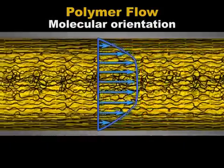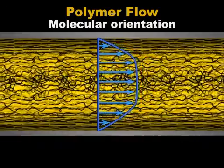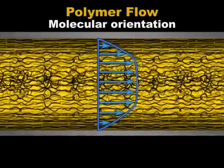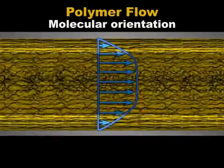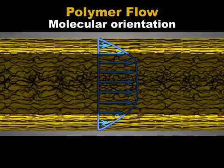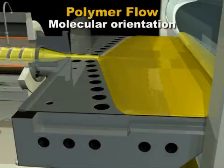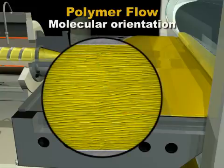In the sheet die, the highest molecular orientation develops near the die walls, where the flow speed differences are the greatest. In thin sheet, molecular orientation may extend completely through the cross section.